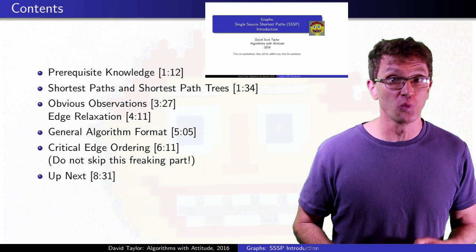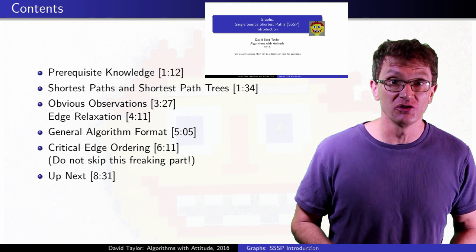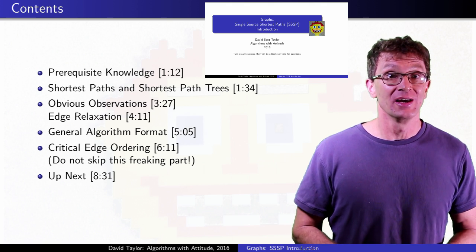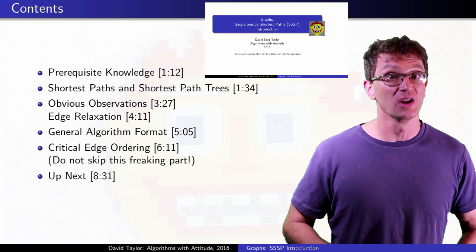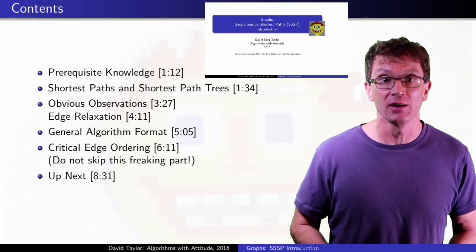After mentioning prerequisites, we cover shortest weighted paths and shortest path trees. Next, we see the observations used by all of the algorithms. Each of the shortest path algorithms will efficiently organize these same ideas differently depending on the graph type.